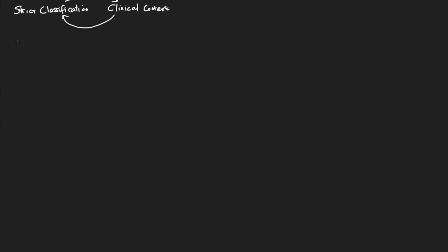This systematic approach to the strict classification really looks at three main things. The first is the acid-base status of the blood — whether or not we are acidic or alkalotic. The second thing we're going to look at is what is the primary disturbance — what's the primary thing causing any change in acid-base status. And finally, we're going to look at whether or not there's any compensation for that disturbance. So we have acid-base status, primary disturbance, and compensation.